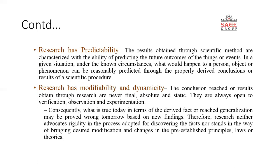Research has predictability. The results obtained through scientific methods are characterized by the ability to predict future outcomes of things or events. In a given situation under known circumstances, what would happen to a person, object, or phenomenon can be reasonably predicted through properly derived conclusions. It is always based on predictions. For example, during elections, voting polls allow researchers to predict who will win that election — it is based on predictions only.